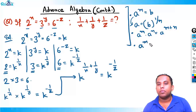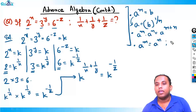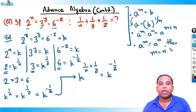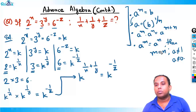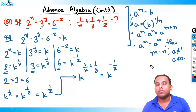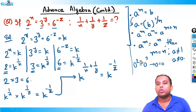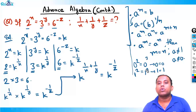We also know that if a^m = a^n, then m = n, provided a ≠ 0 and a ≠ 1. This is because if a = 0, then 0² = 0³ doesn't imply 2 = 3; similarly for a = 1. So the rule is only valid when a ≠ 0 and a ≠ 1.